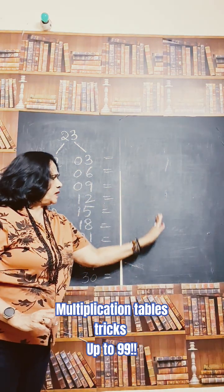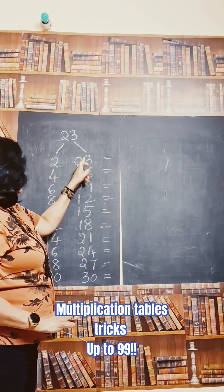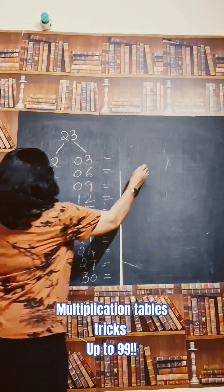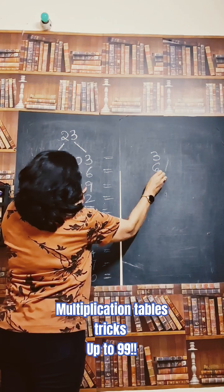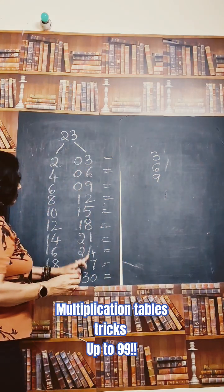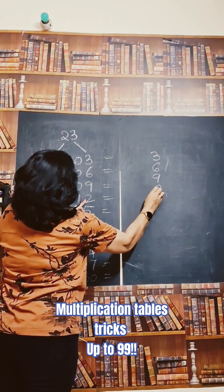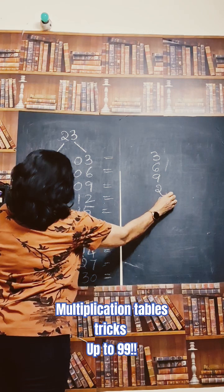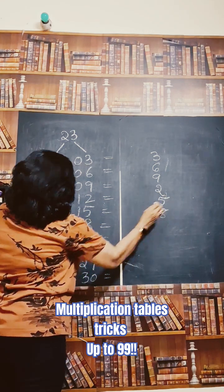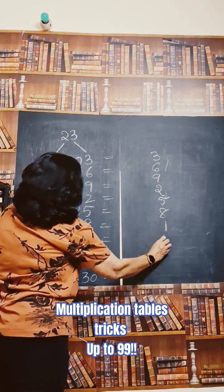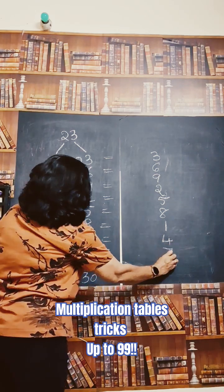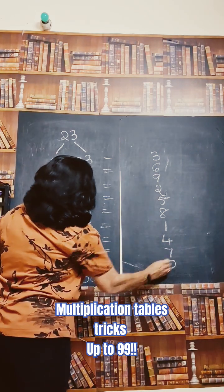write all the units place numbers here in the tables 3. First is 3, then 6, 9, the units place number of tables 3, then 2, then 5, 8 and the number is 1, then 4, 7 and 10. Okay.